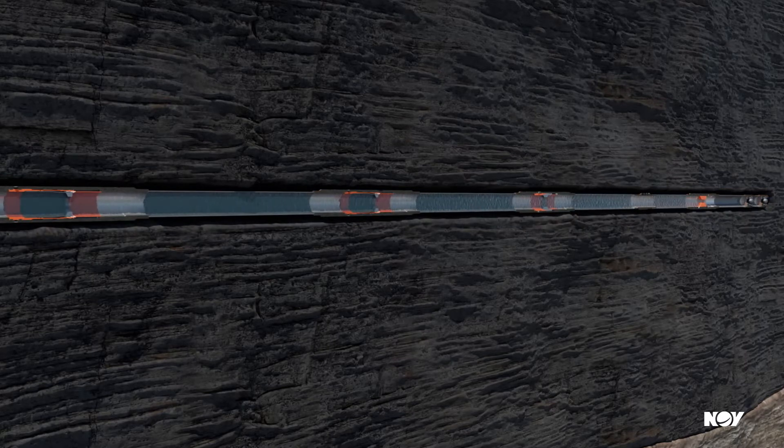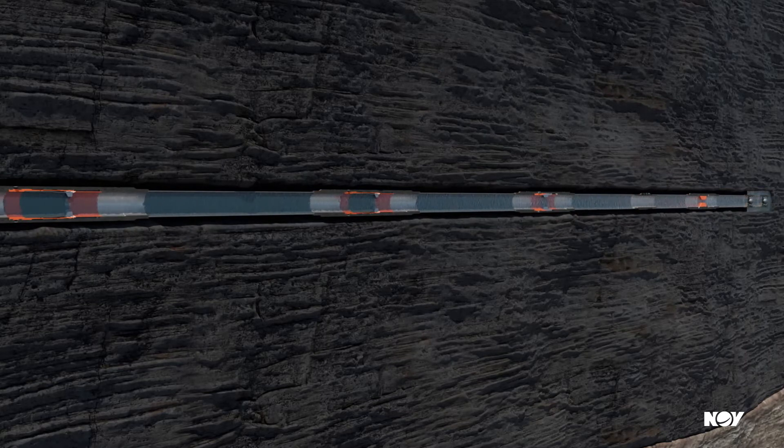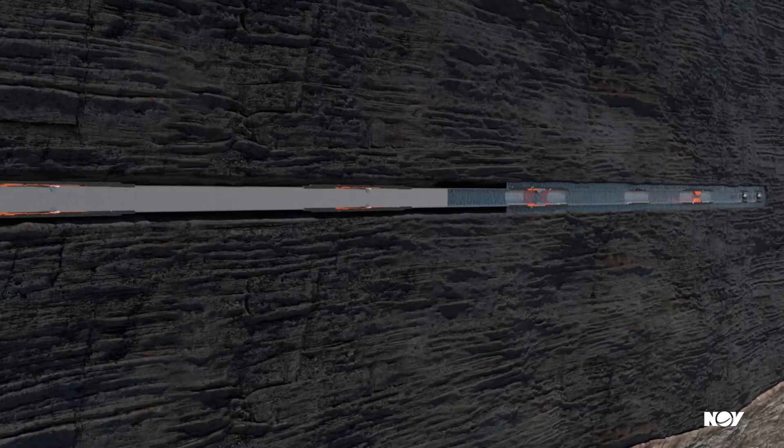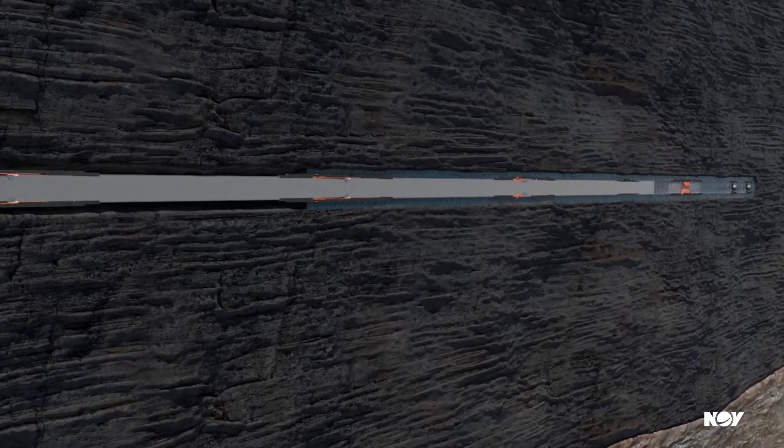At depth, circulation is established to remove any residual cuttings. Cement is then pumped into the well, filling the annulus to support and anchor the completion string and provide isolation between stages.